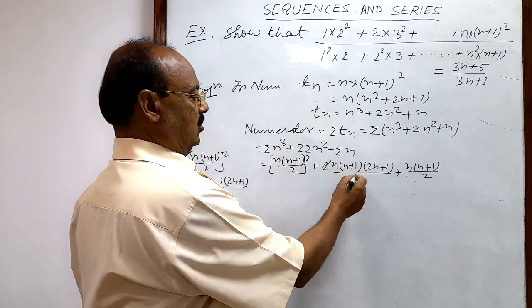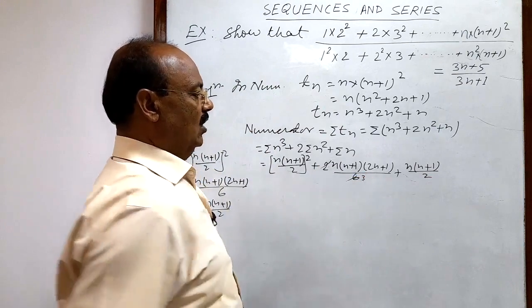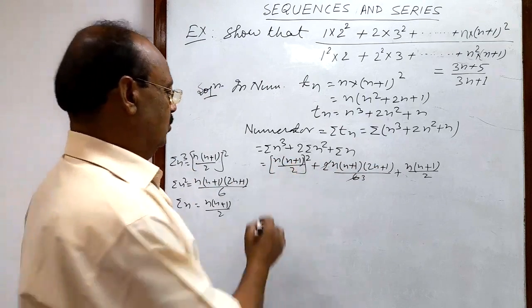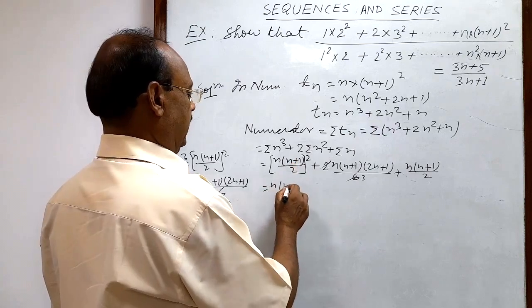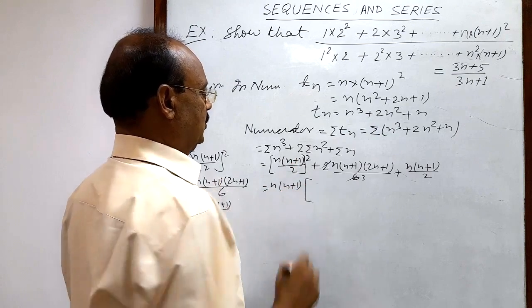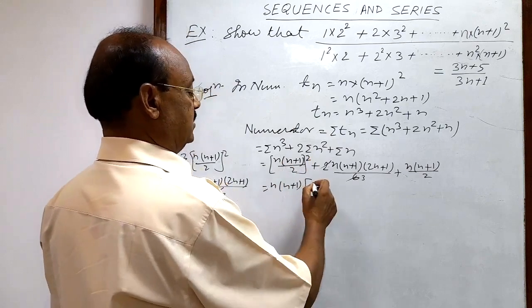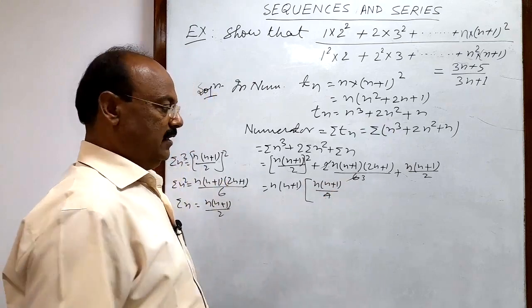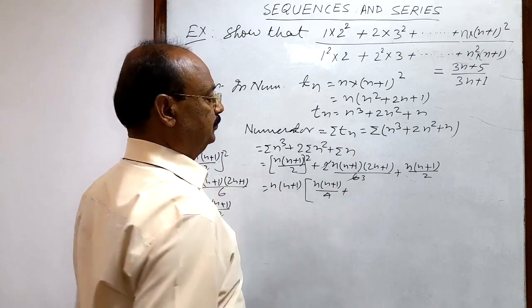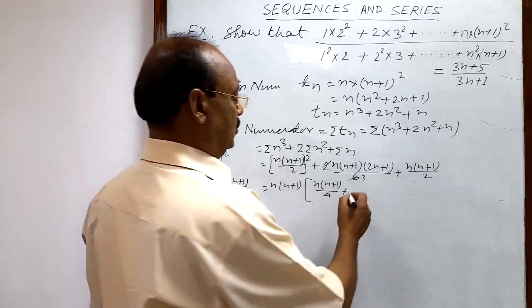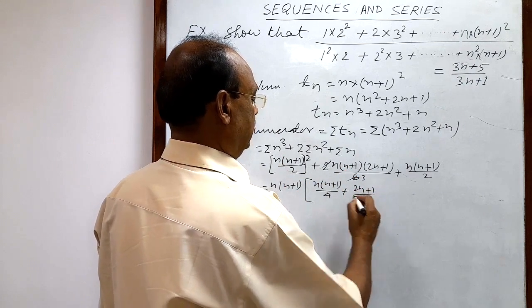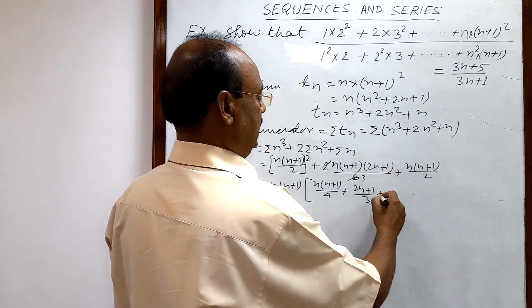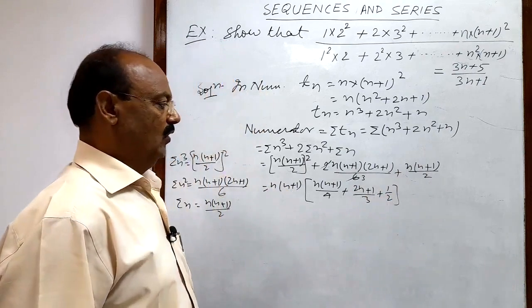The 2 cancels with 6 to give 3. In each of the three terms, n(n+1) is common, so we take n(n+1) common. We get: n(n+1) · [n(n+1)/4 + (2n+1)/3 + 1/2].